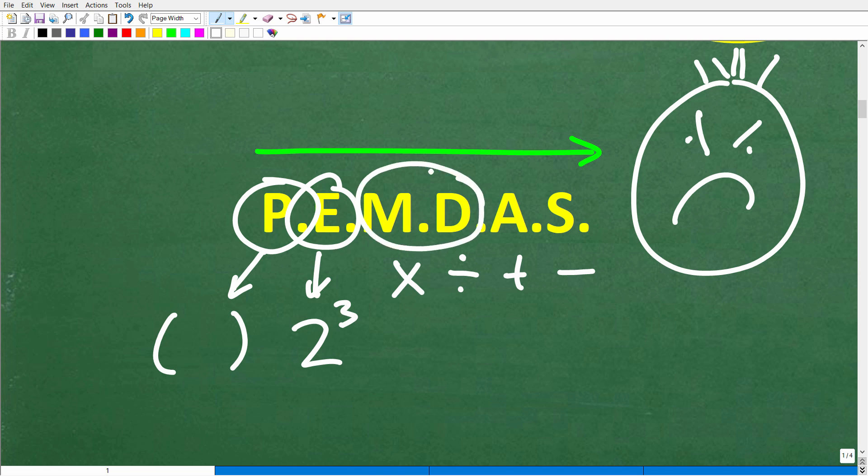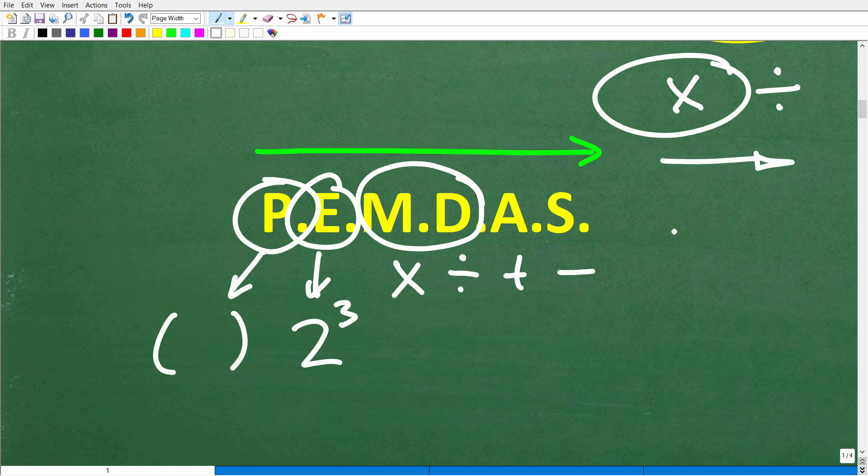So the way this actually works is the following. We're going to do multiplication or division, whatever we see first, from left to right. So if we have multiplication then division in our problem, we're going to do the multiplication first because that's what we have from left to right. But if we have division then multiplication, we're going to do the division first because that's what we see first from left to right. And addition and subtraction work the same way.